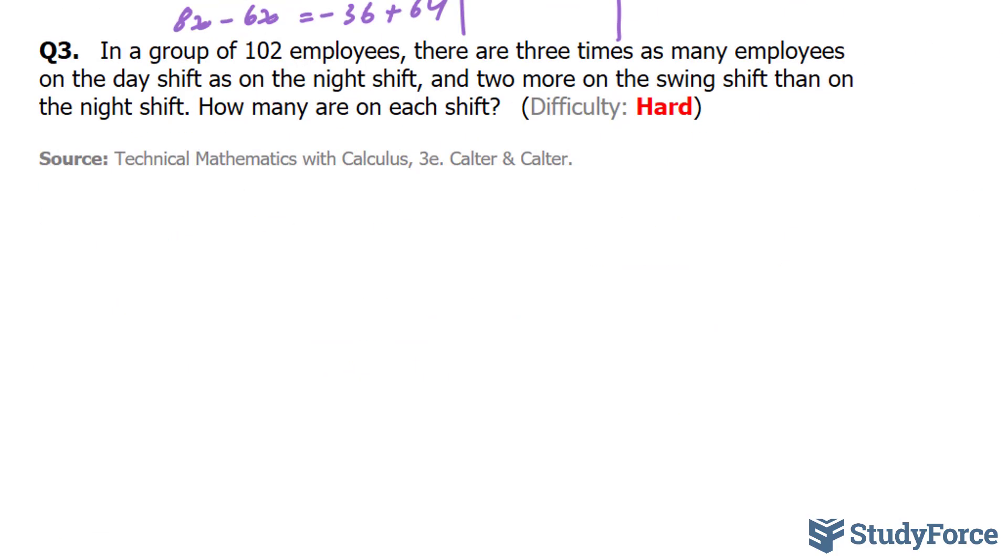In our last question, which is the hardest one. In a group of 102 employees, there are three times as many employees on the day shift as on the night shift. And two more on the swing shift than on the night shift. How many are on each shift? To answer this question, we know that there are 102 employees in total. And there are three shifts, a night shift, a day shift, and a shift known as a swing shift.